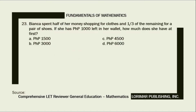Problem number 23. Bianca spent half of her money shopping for clothes and one-third of the remaining for a pair of shoes. If she has 1,000 pesos left in her wallet, how much does she have at first? A. 1,500 pesos. B. 3,000 pesos. C. 4,500 pesos. D. 6,000 pesos.